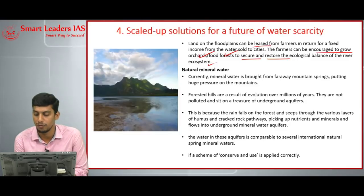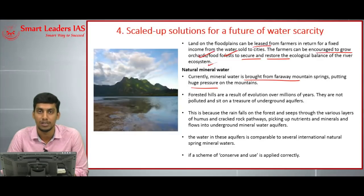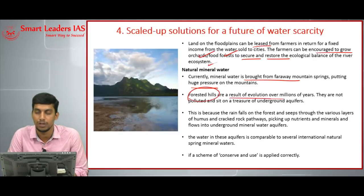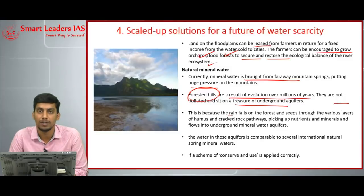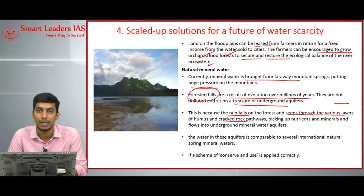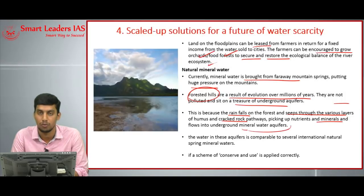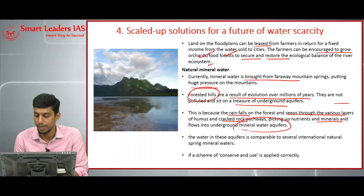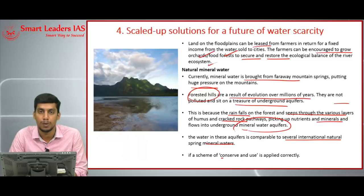Mineral water has become a part of our daily life, brought from faraway mountain springs, which puts extra pressure on mountains, and we use plastic bottles that end up filling landfills. But forested hills are the result of evolution over millions of years — they are not polluted because they sit on treasures of underground aquifers. Rainfall on forest areas seeps through various layers of humus and cracked rock, picking up nutrients and minerals, flowing underground and settling as mineral water aquifers. We must adopt a conserve-and-use policy to use water sustainably.